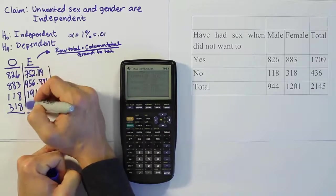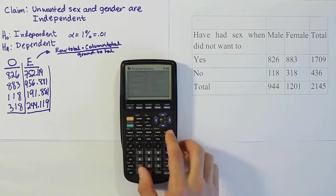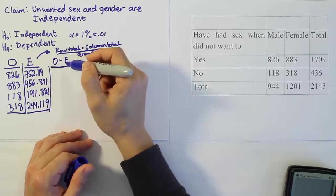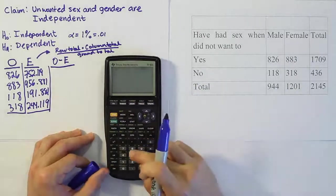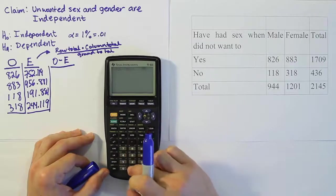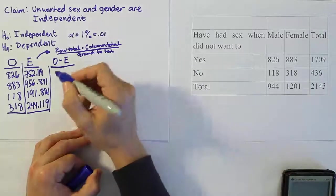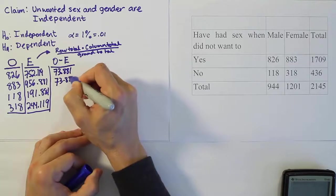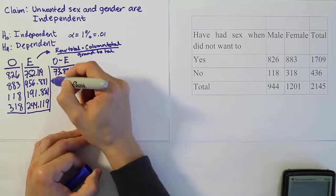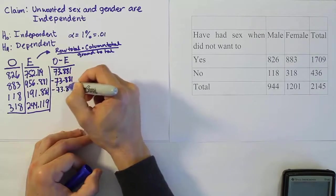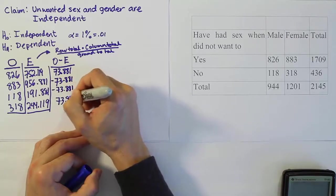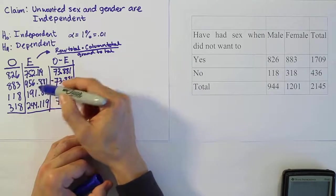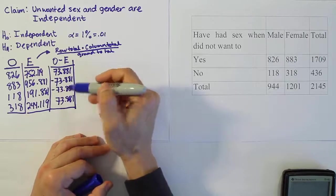Now the next step is to do a column called observed values minus the expected values. This is actually an easy column to get. We're going to do 826 minus 752.119. When we get that answer which is 73.881, we realize that all the other ones underneath are actually going to be the same thing, except sometimes they'll be negative. Because that's the pattern in these chi-square procedures. We're able to get one of these only and then fill all the rest in just figuring out the sign.